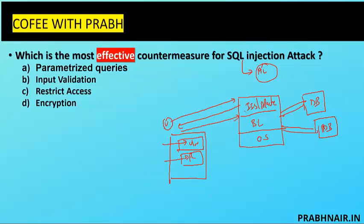Attackers exploit this business logic layer. One defense is input validation to restrict user input, but the problem is that clients can use different scripts to bypass input validation. So input validation cannot fully prevent SQL injection. If the option is parameterized queries versus input validation, restrict access, and encryption — encryption applies to stored data, and restricting access doesn't address the injection mechanism — parameterized queries are more effective.